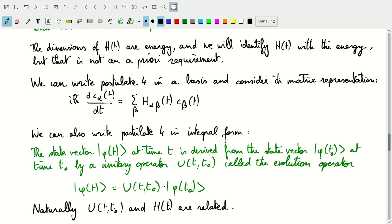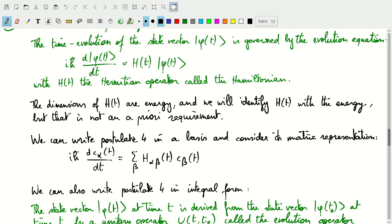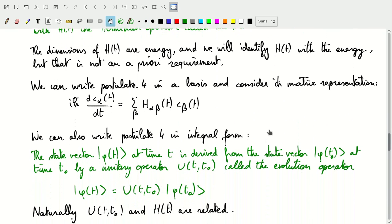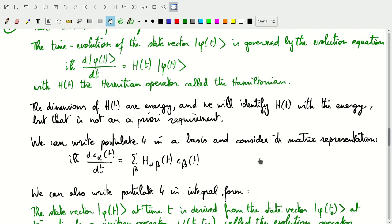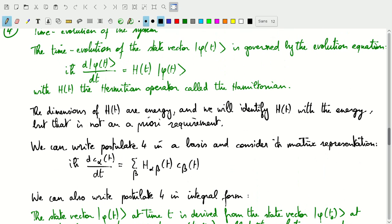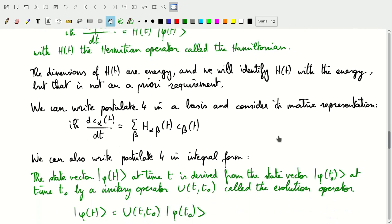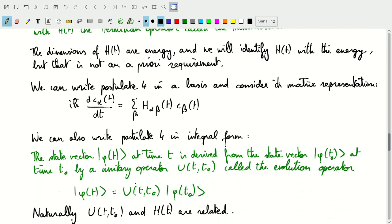Naturally you can imagine that U and our Hamiltonian operator here will be related and one other, as you can see from this first order differential equation and this kind of linear relationship, you can kind of imagine how U will look in terms of H and it will involve an exponential.